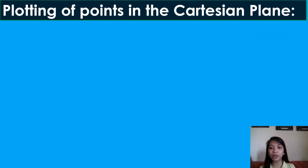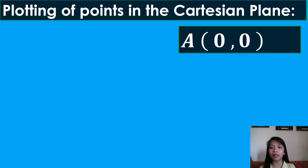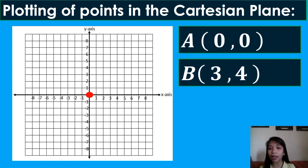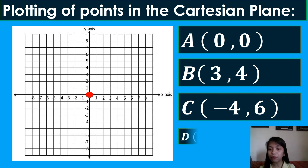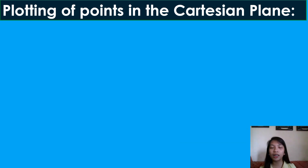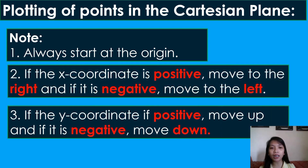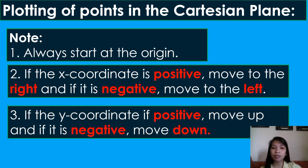Since we already know what an ordered pair is, we are now ready to plot points on the Cartesian plane. In plotting points, we need to take note of the following: First, we always start at the origin. If the x-coordinate is positive, we move to the right; if it is negative, we move to the left. If the y-coordinate is positive, we move up; and if it is negative, we move down.